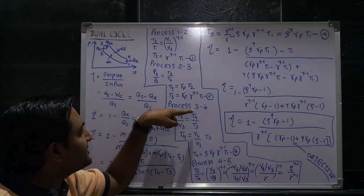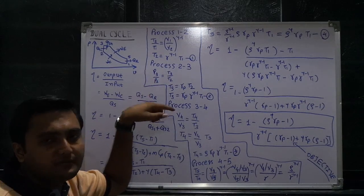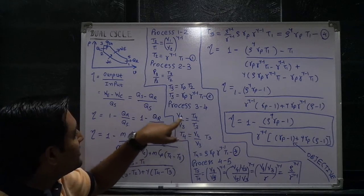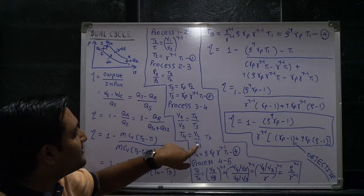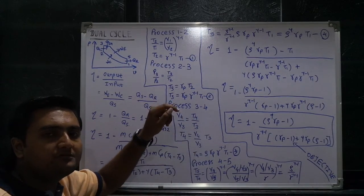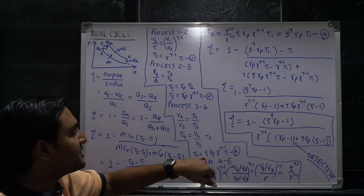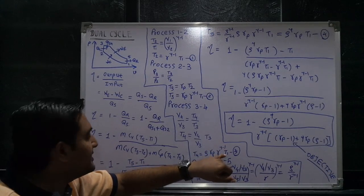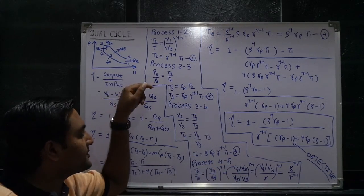For process 3 to 4, using PV/T = constant: P4·V4/T4 = P3·V3/T3, and since P3 equals P4 (constant pressure process), V4/V3 = T4/T3. So T4 equals (V4/V3) times T3. V4/V3 is the cutoff ratio, denoted by rho. Therefore T4 in terms of T1 is rho times rp times r raised to gamma minus 1 times T1. Process 4 to 5 is also an isentropic process.